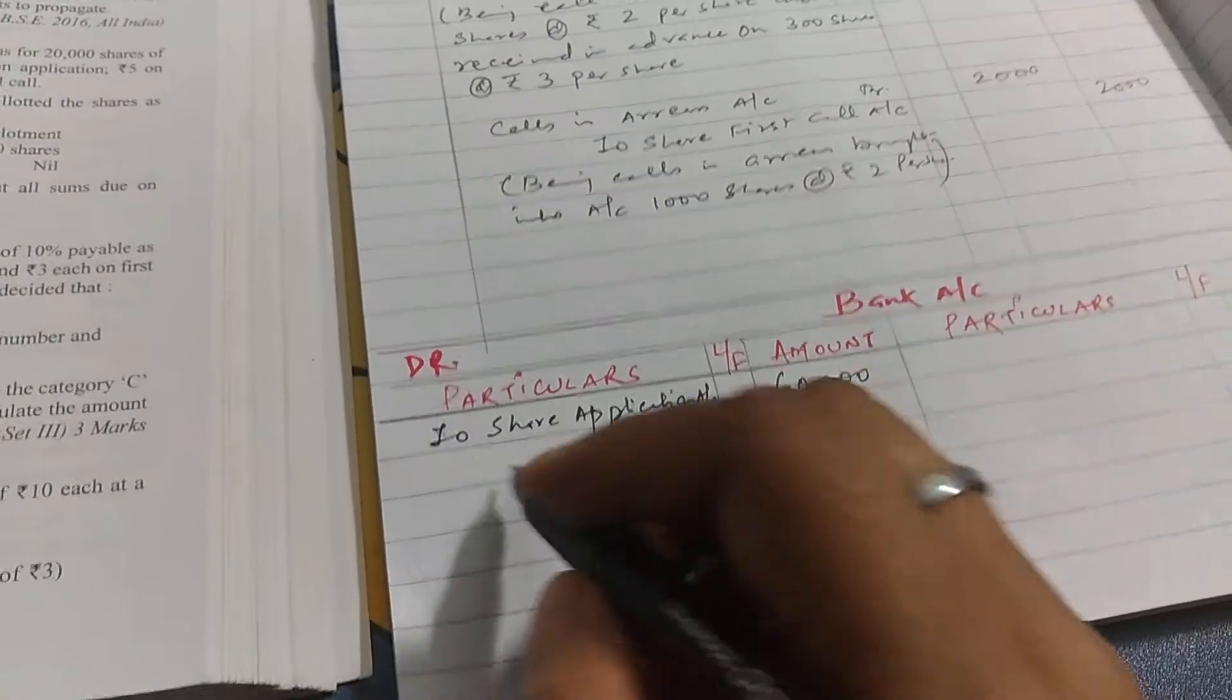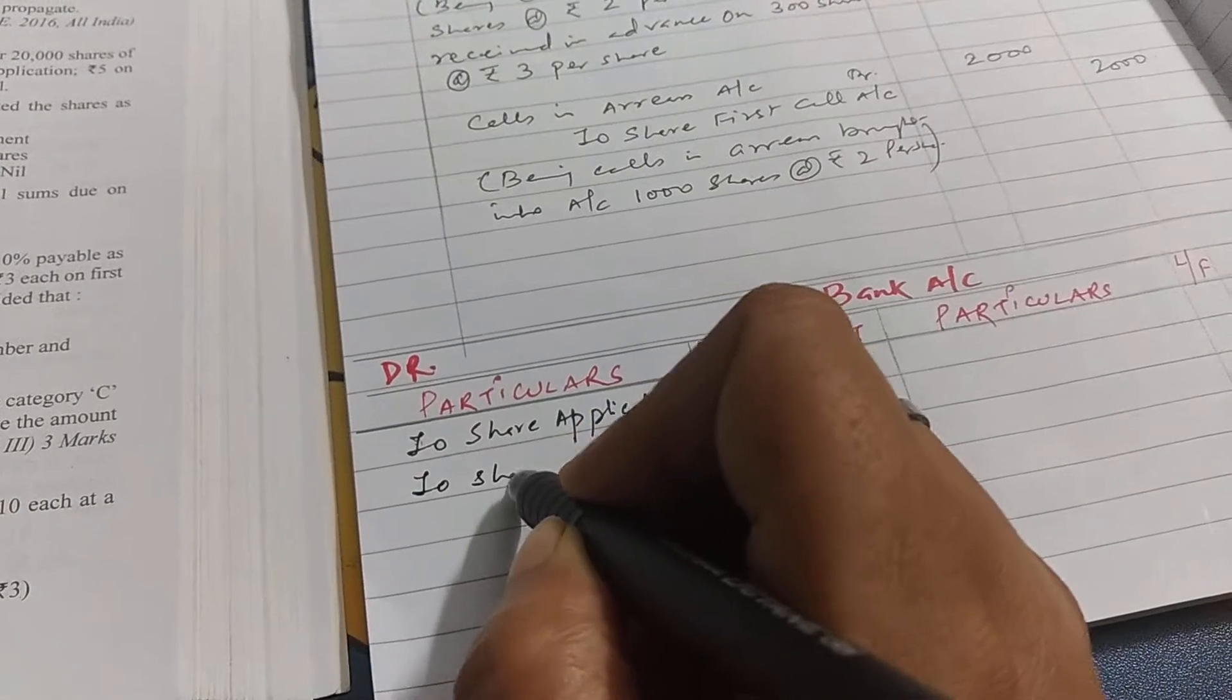Then the second is bank account debit to share allotment account. So to share allotment.